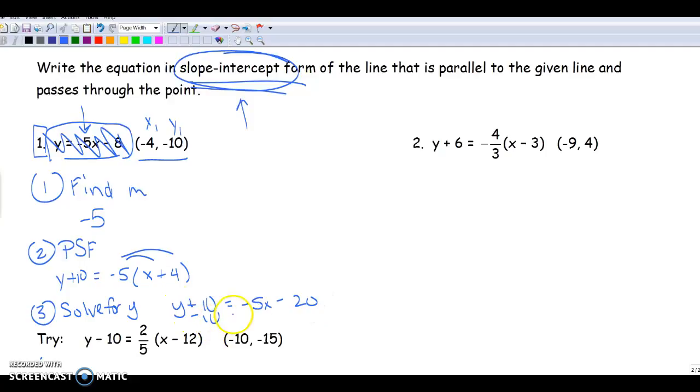And then from there, we're going to minus 10 on both sides. So we're going to end up with y equals negative 5x minus 30. And that's going to be our answer in slope-intercept form.